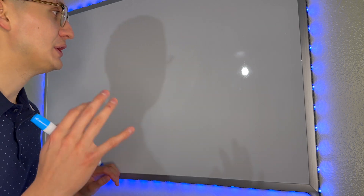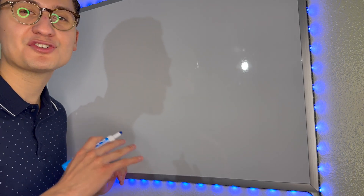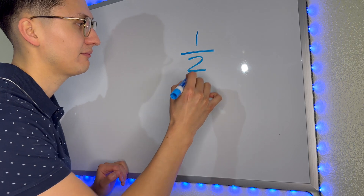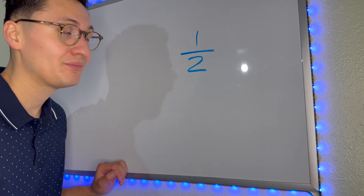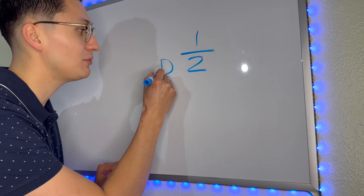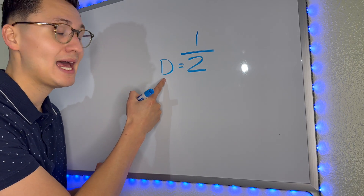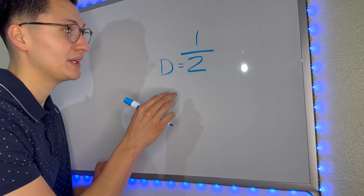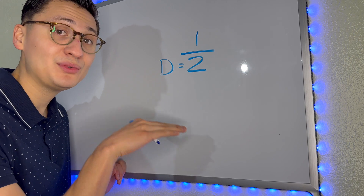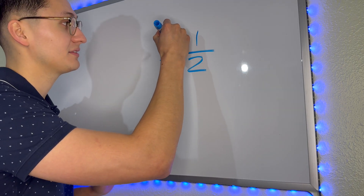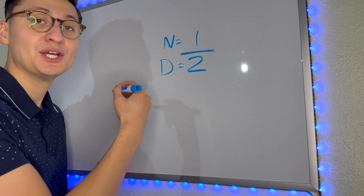Now, if you don't know what a denominator is, it is so simple if you remember this one thing. So let's say we have a fraction. The denominator is going to be the number downstairs. That's an easy way to remember it — denominator, downstairs. If this was a two-story house, the number downstairs is the denominator. The number upstairs is the numerator.